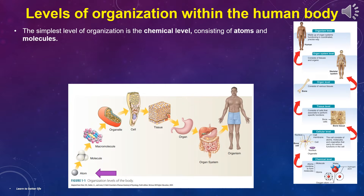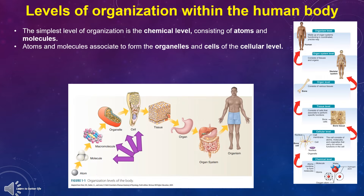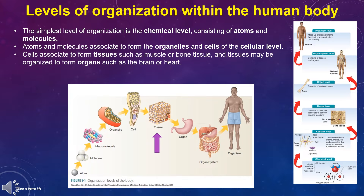Now let's learn about the levels of organization within the human body. The simplest level of organization is the chemical level, consisting of atoms and molecules. Atoms and molecules associate to form the organelles and cells of the cellular level. Cells associate to form tissues such as muscle or bone tissue, and tissues may be organized to form organs such as the brain or heart.